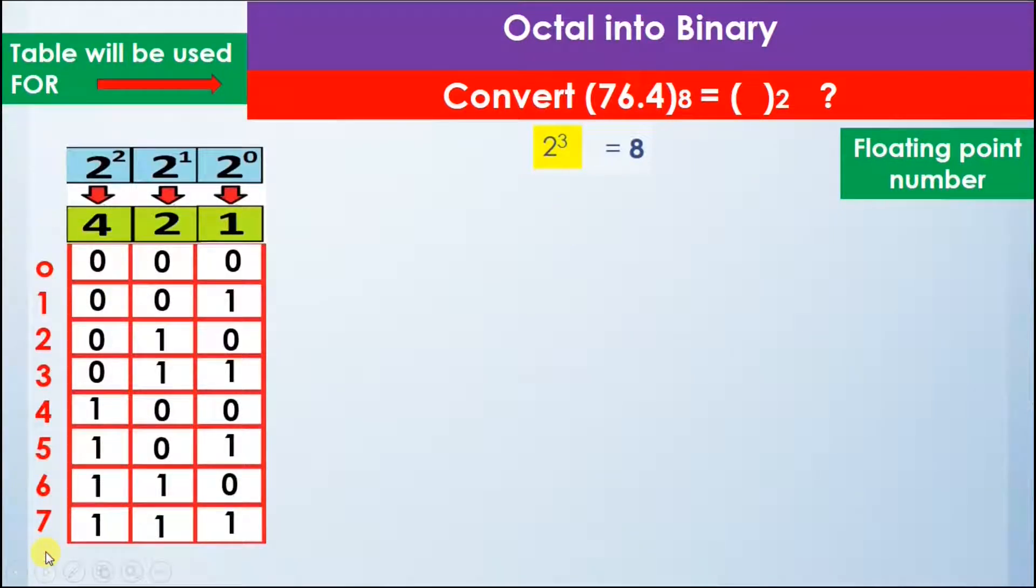First of all we will look at the number 7 and find it in the table. Here is the number 7 in the table and it equals 111. So we write 7 as 111.